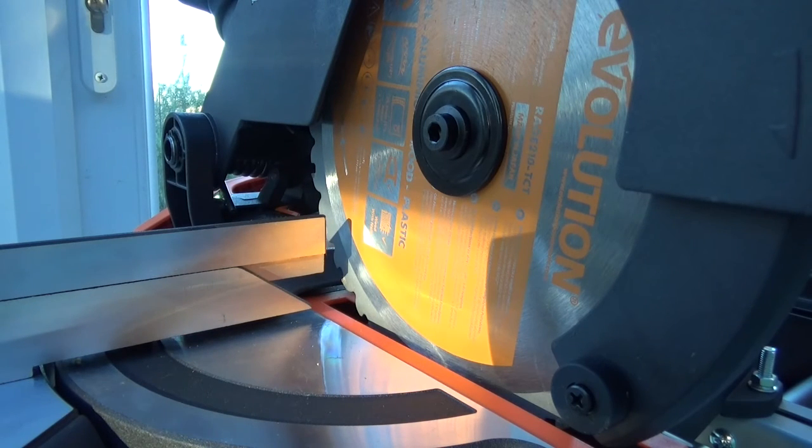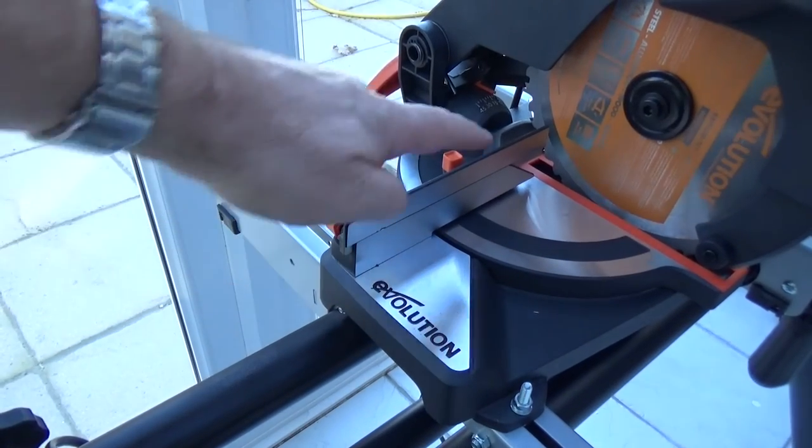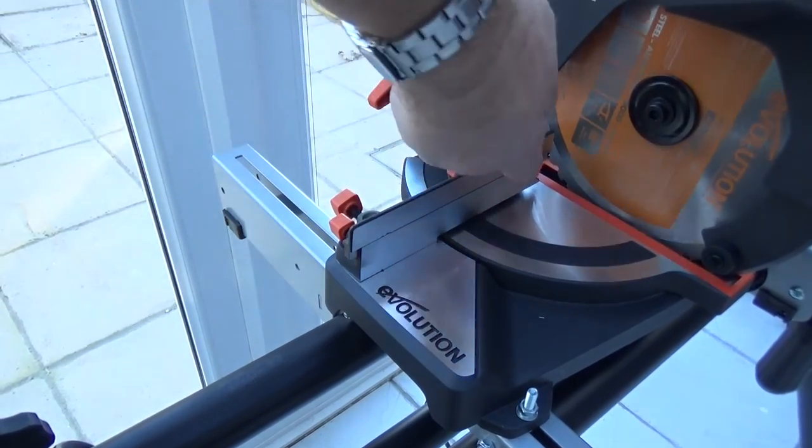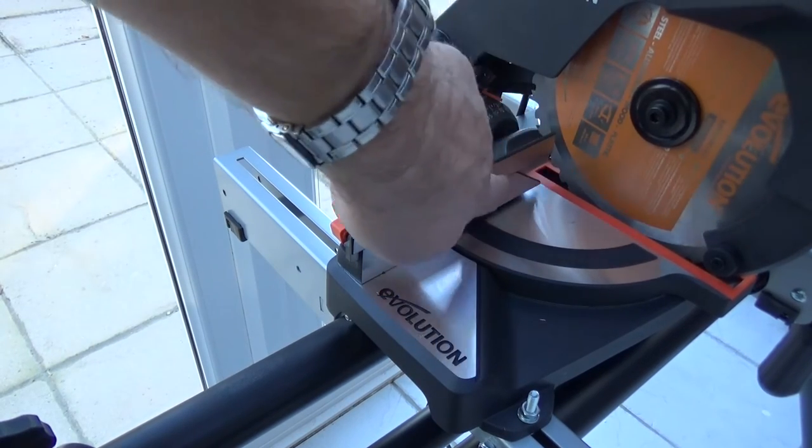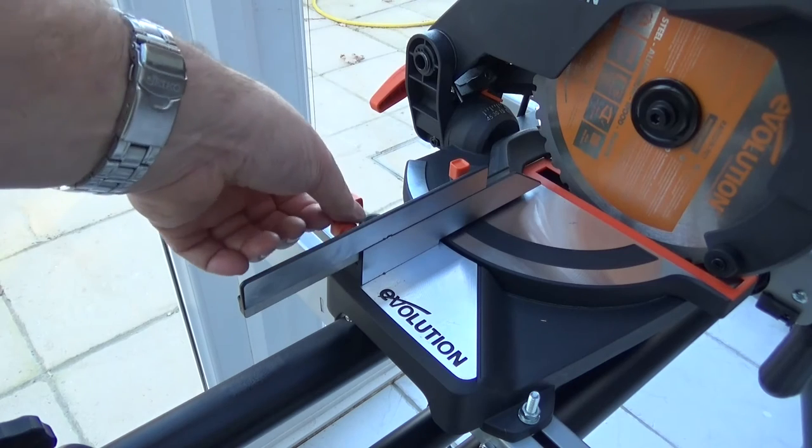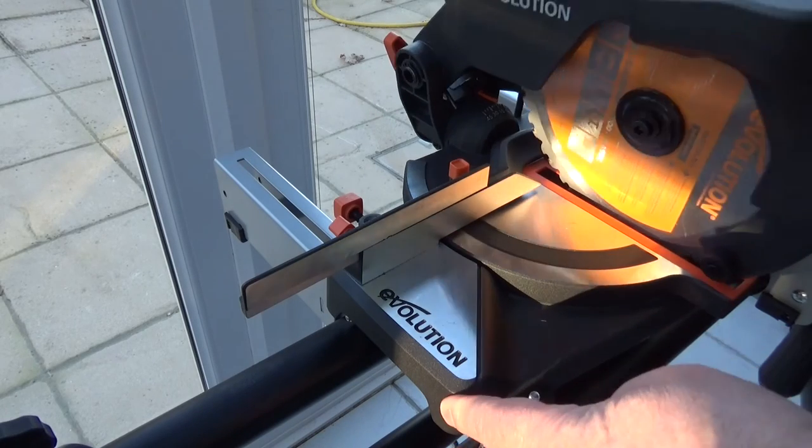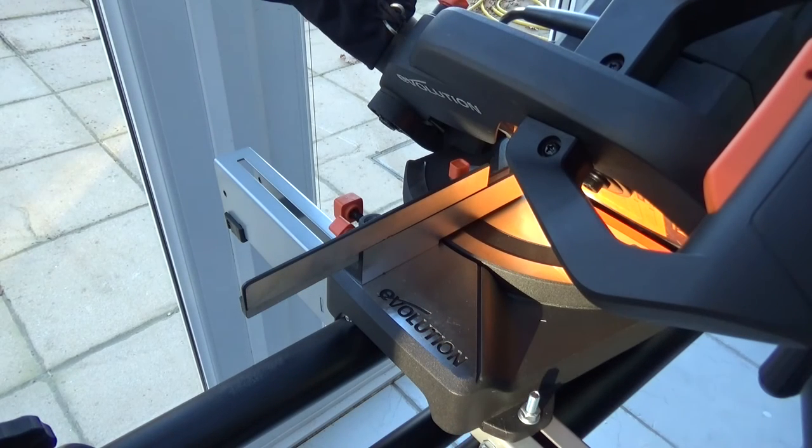The last check we've got to make with the miter saw is to put it at a 45 degree bevel and make sure the 45 degree bevel is correct. First thing we've got to do is slide this fence back. You'll notice we've already got a beveled angle on the bottom fence, so pull it back out the way, slacken off the clamp at the back, and then tilt the blade over till it stops, which should be 45 degrees.